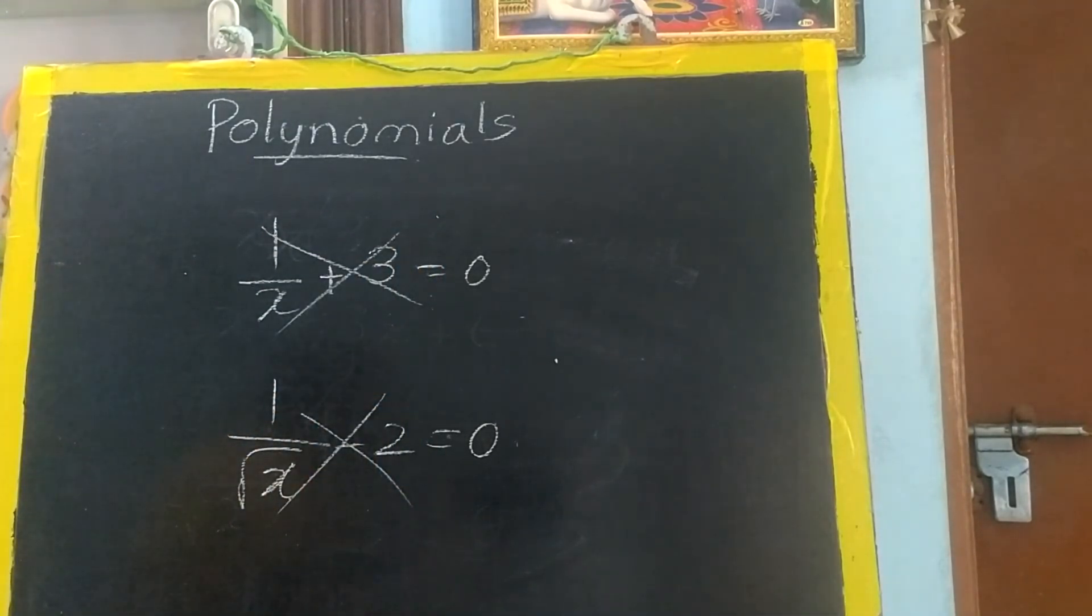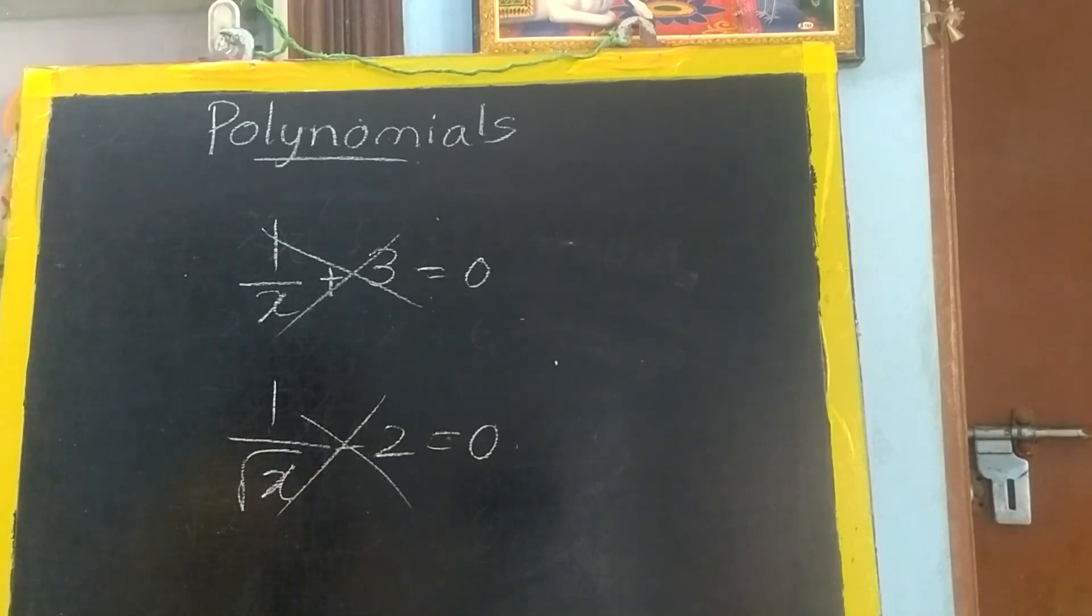So what all have we learned? Linear polynomial, quadratic polynomial, cubic polynomial. We have learned about polynomials, types of polynomials, degree of the polynomial, and which is not a polynomial. Based on this, I will attach a question paper also.